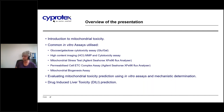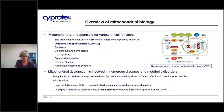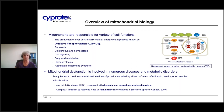Mitochondria are responsible for a variety of cellular functions, the major one being the production of over 95% of ATP via oxidative phosphorylation (oxphos) — the breakdown of fuel sources such as glucose, protein and fat in the presence of oxygen to ultimately form water, carbon dioxide and ATP — using a series of enzymes and complexes known as the electron transport chain (ETC). They're also involved in other complex cellular functions such as apoptosis, calcium flux homeostasis, and fatty acid metabolism.